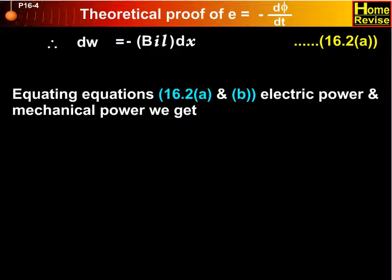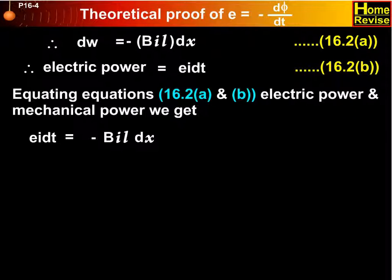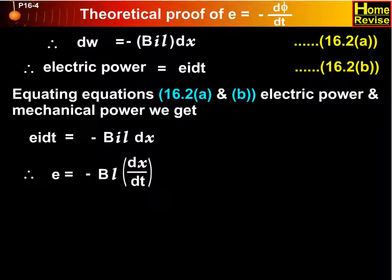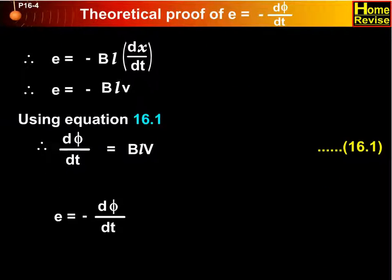Equating equations 16.2A and B, we get eI equals BILv. Therefore, e equals minus BL into dx upon dt. Therefore, e equals minus BLv. Using equation 16.1, d phi upon dt equals BLv. Therefore, e equals minus d phi upon dt.